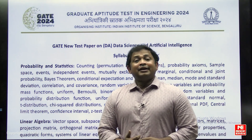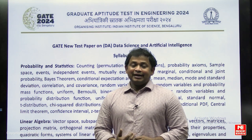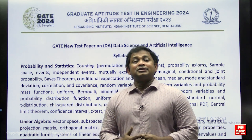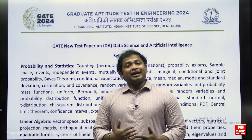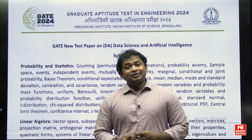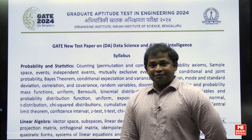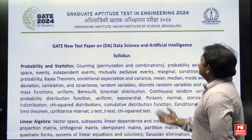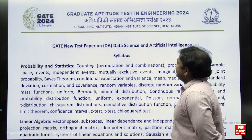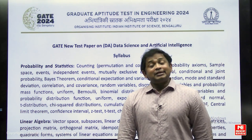First, I am going to discuss the syllabus content in Data Science and Artificial Intelligence. Later, I will compare this syllabus with major engineering streams like Computer Science, Electrical, Electronics, and Mechanical. This syllabus is given by IISc Bangalore. In this Data Science and Artificial Intelligence paper, we have a total of seven subjects.